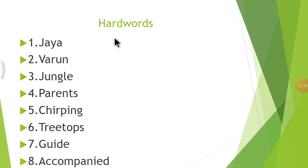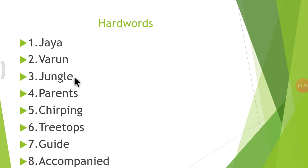Yesterday we wrote hard words. Let's start. Number 1: Jaya. Number 2: Varun. Number 3: Jungle. Number 4: Parents. Number 5: Chirping. Number 6: Treetops. Number 7: Guide. Number 8: Accompanied.